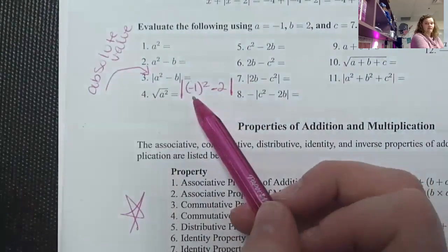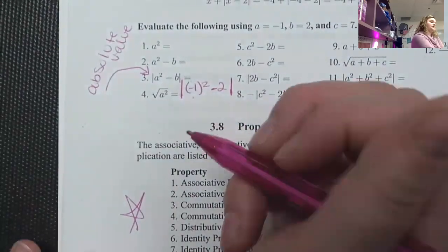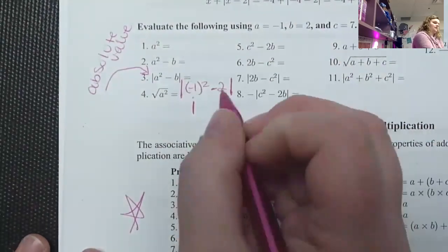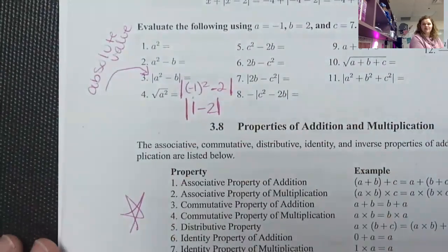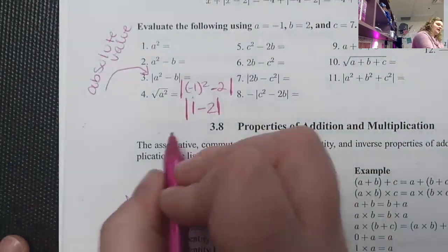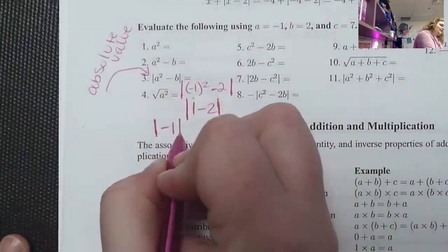Well, negative one squared is a negative one times a negative one, which is a positive one. So I have positive one minus two. Well, what is one minus two? Well, that's a negative one.